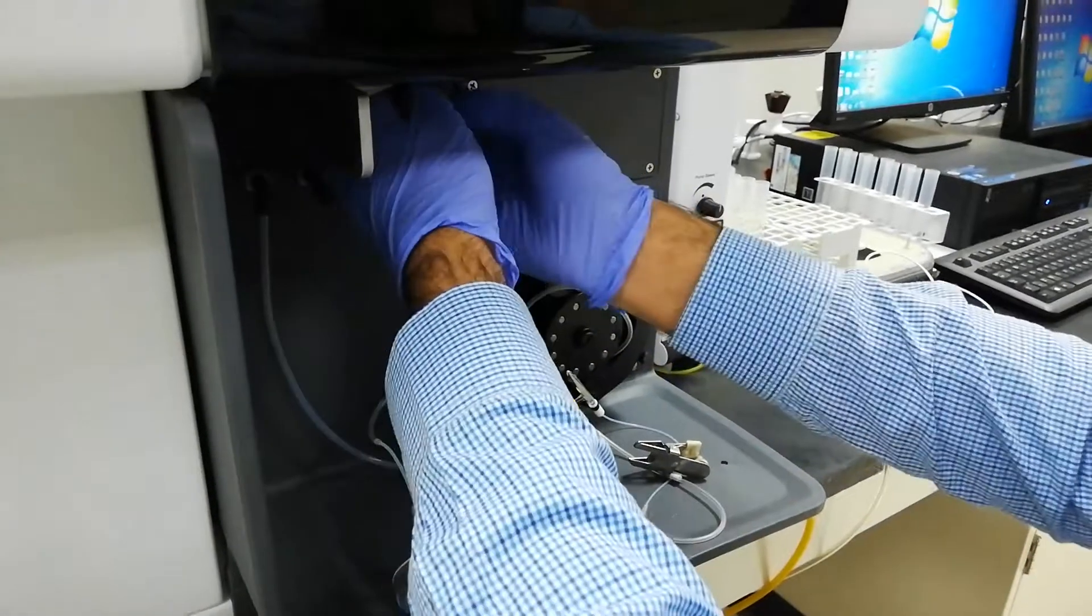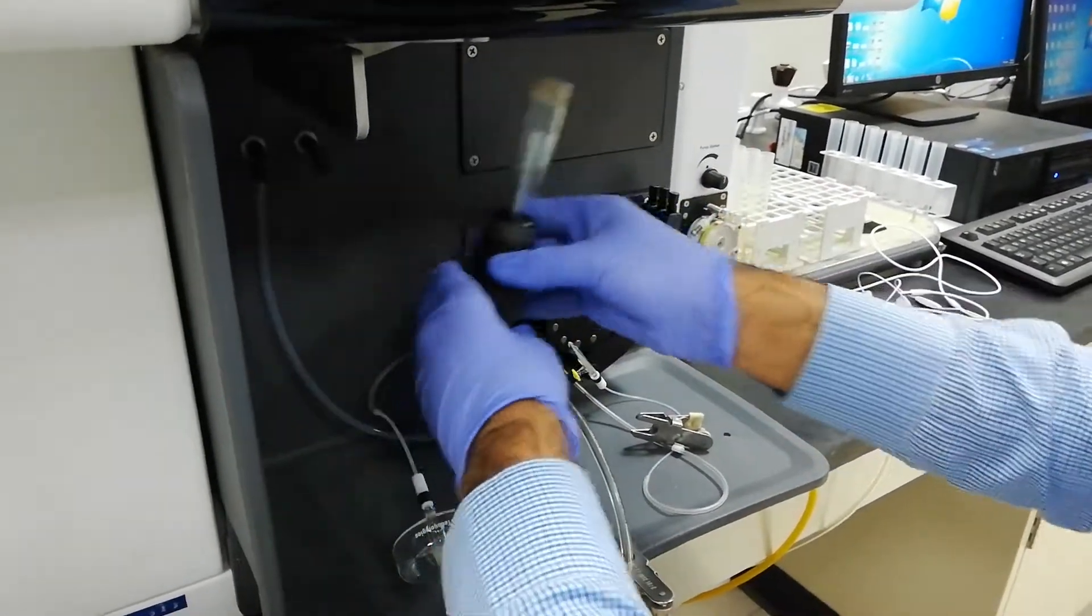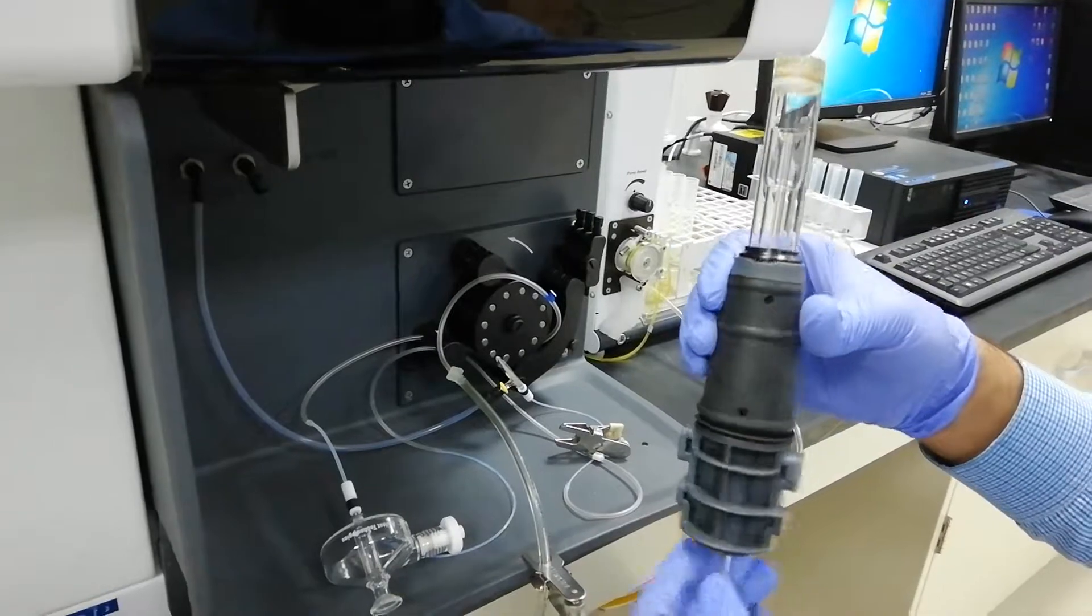This is the torch door. We have to open it and take it out. Currently, it is on the spray chamber. You can see that this is the torch.